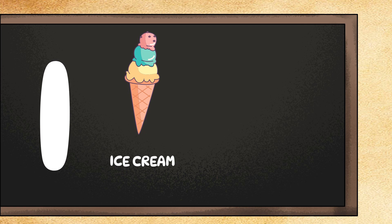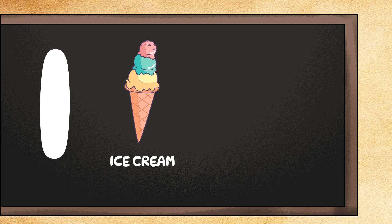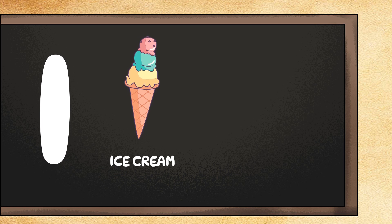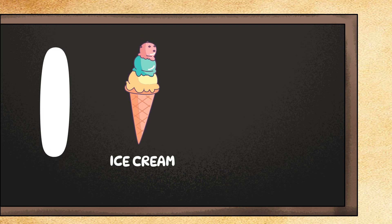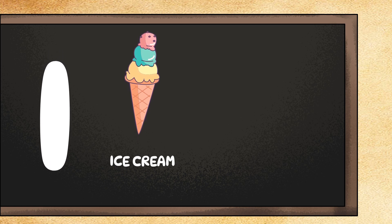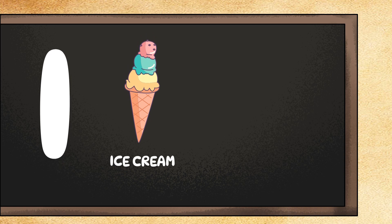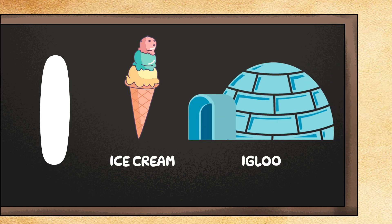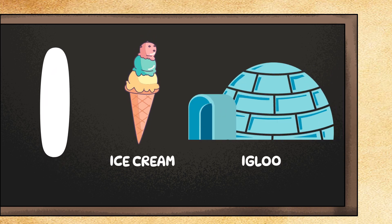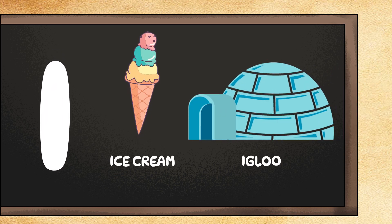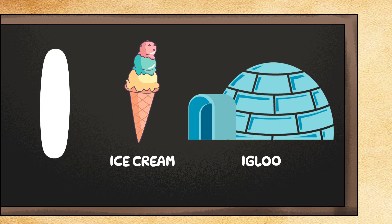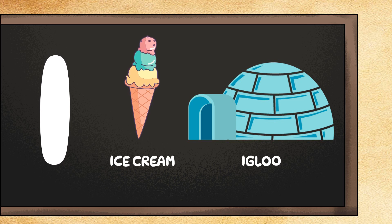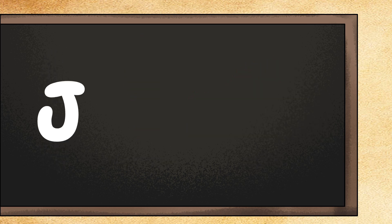I is for ice cream. Can you pretend to lick an ice cream cone? Delicious! I is also for igloo. Can you build an imaginary igloo with your hands? Brrrr!